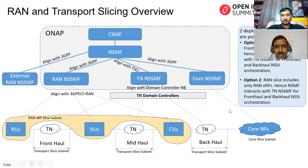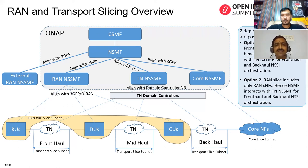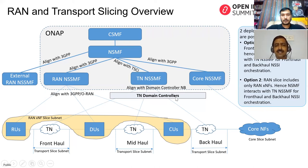An important point: we want to support connectivity from an NSMF within ONAP to a RAN NSSMF that is outside ONAP. This requires standard interfaces between NSMF and NSSMFs. For RAN NSSMF and core NSSMF interfaces toward the NSMF, we want alignment with 3GPP APIs. For NSMF to TN NSSMF — and for option one, RAN NSSMF to TN NSSMF — it shall be aligned with the TSCAI, the Transport Slice Connectivity Interface specified by IETF.